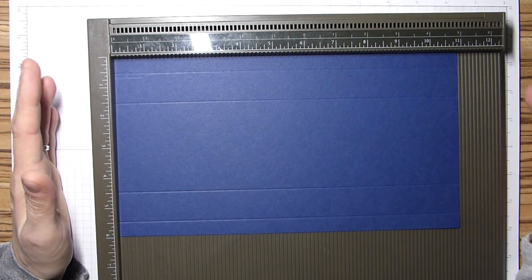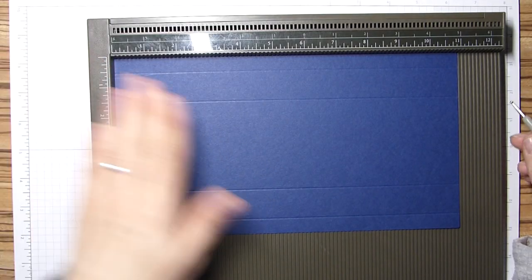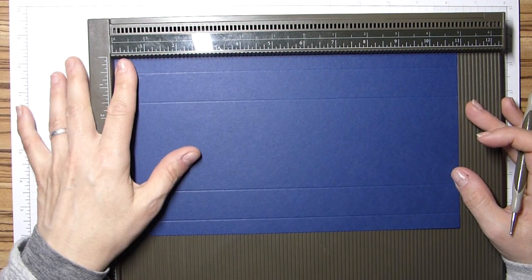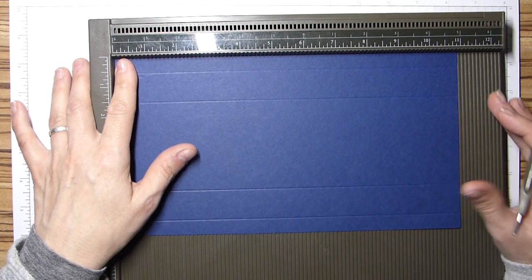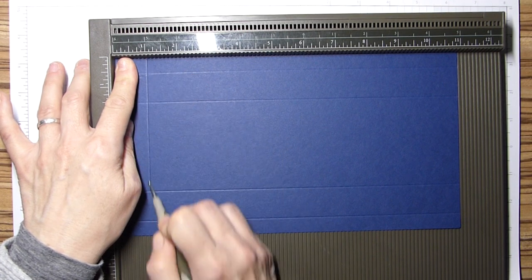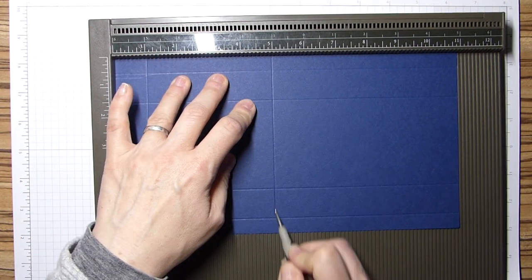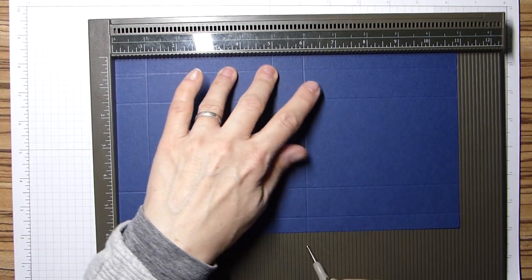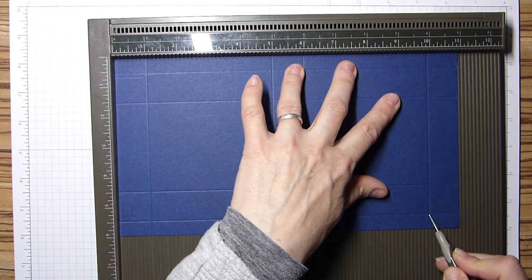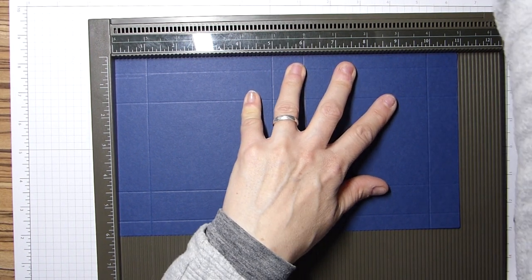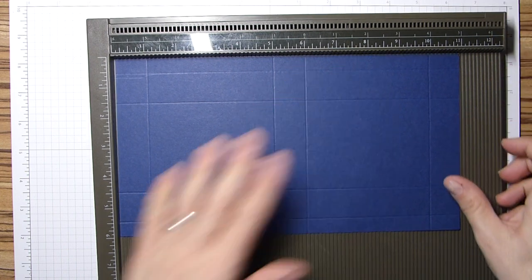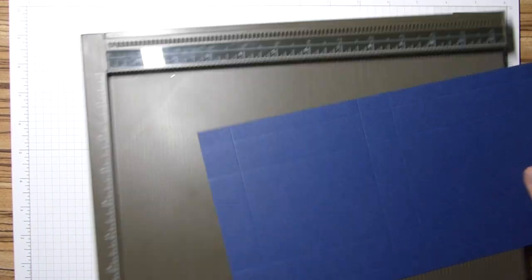We're then going to rotate, and it doesn't matter if it's clockwise or anticlockwise, because they're both the same. And then we're going to score on the long side at one, five, six and ten inches. And that will be two and a half, twelve and a half, fifteen and twenty-five centimetres.